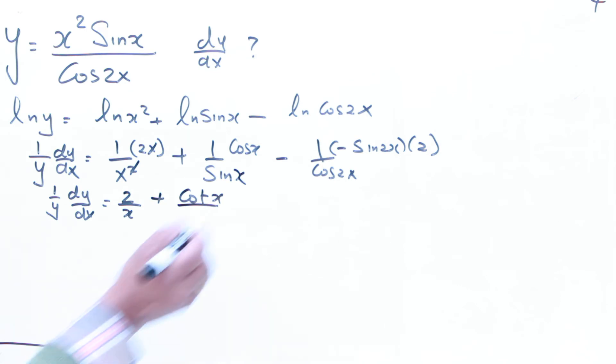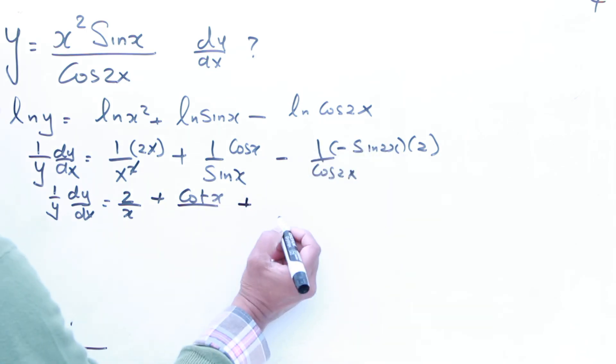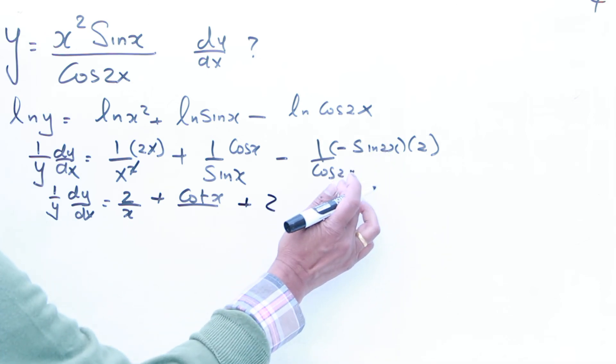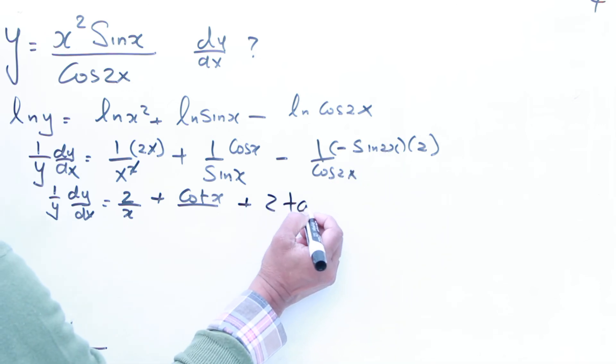Okay? Then, minus into minus is plus, 2 sin 2x over cos 2x, that is going to be tan 2x. So, so far, we have done that one. Okay? Now, we can simply find the dy by dx.